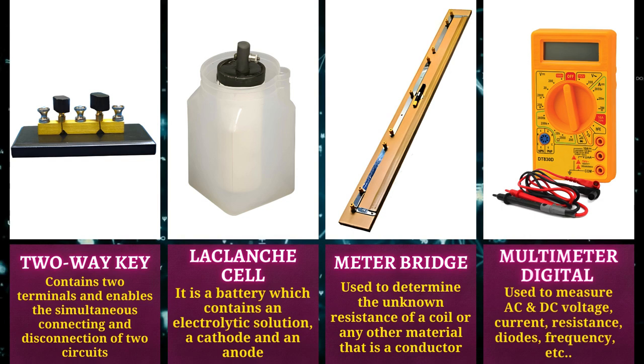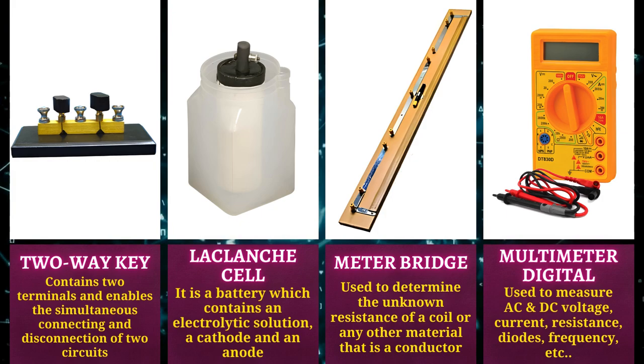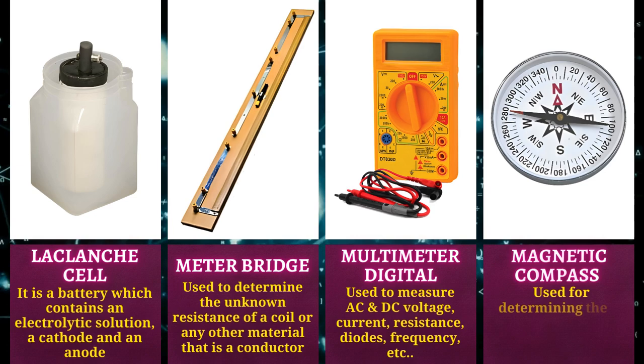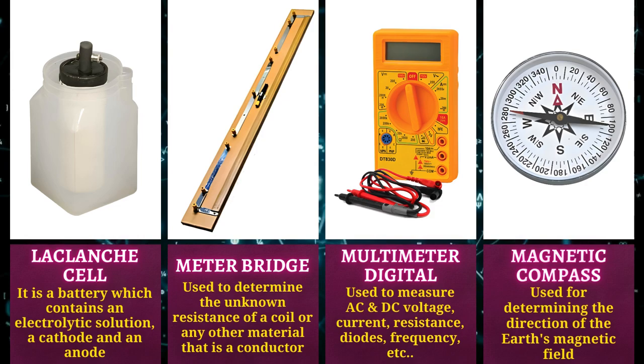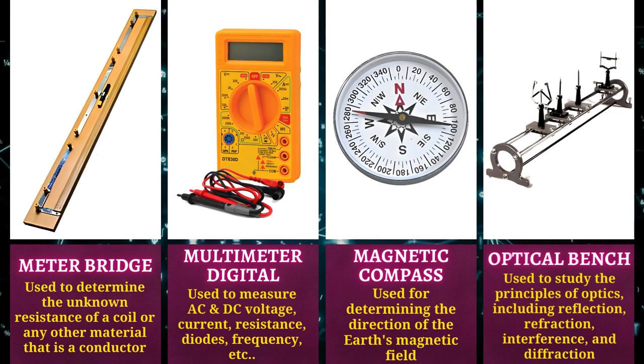Digital multimeter is used to measure AC and DC voltage, current, resistance, diodes, frequency, etc. Magnetic compass is used for determining the direction of the earth's magnetic field.